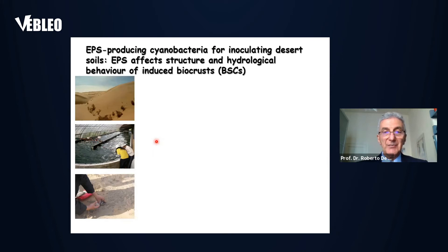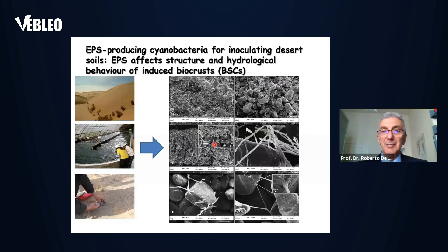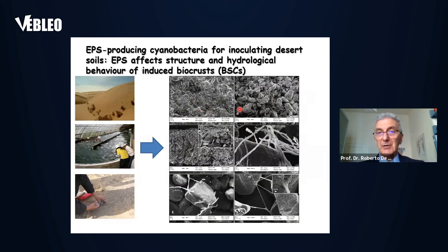The biological soil crust is composed of cyanobacteria filaments and the polysaccharides they release, forming the EPS matrix. Looking more in depth with electron microscopy, you can see sand particles connected by a network of filaments due to the growth of filamentous cyanobacteria. Two different filamentous cyanobacteria are used particularly. You also see the role of the polysaccharides, which act as a sort of glue connecting all the sand particles.